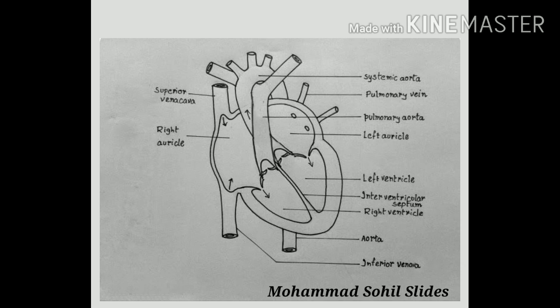Now coming to the right atrium. The right atrium receives blood from three veins: the superior vena cava, the inferior vena cava, and the coronary sinus. It forms the right border of the heart and has a wall thickness of about 2–3 mm. The posterior wall is smooth and the anterior wall is rough. Blood passes from the right atrium to the right ventricle with the help of the tricuspid valve, also known as the atrioventricular valve, which consists of dense connective tissue covered by endocardium.